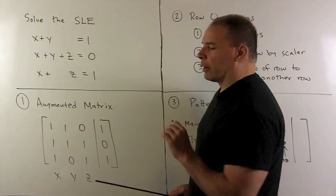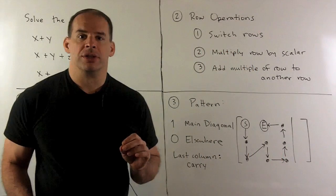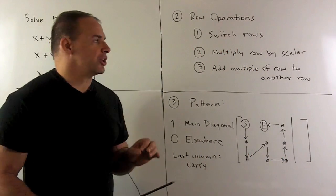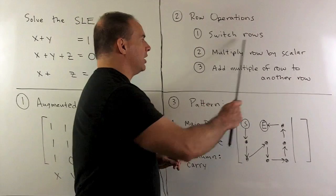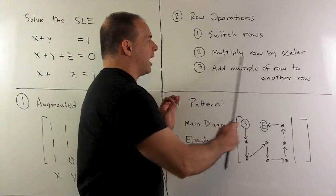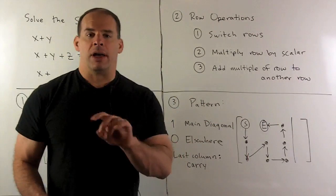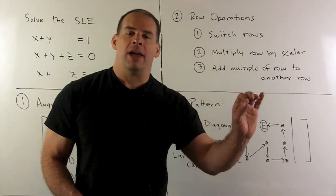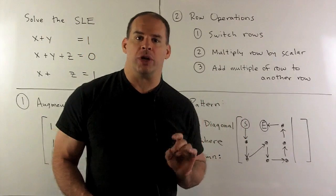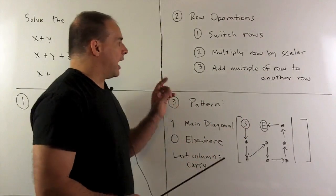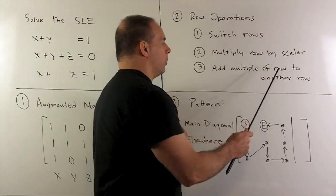Now, once I have the augmented matrix, I can perform row operations. So we have 3 row operations. I can switch any 2 rows. I can multiply any row by a scalar. Equivalently, we can factor out any number that's common to each entry in a row. And I can add a multiple of 1 row to another.